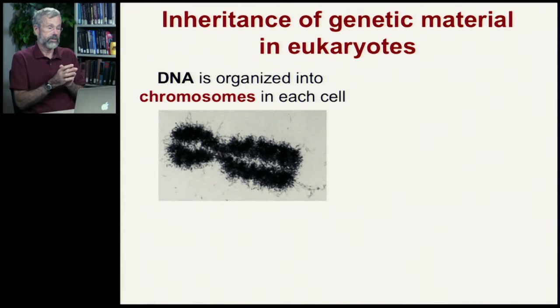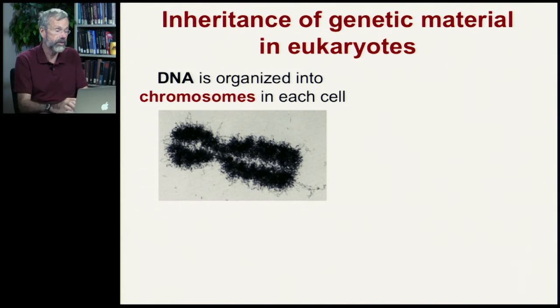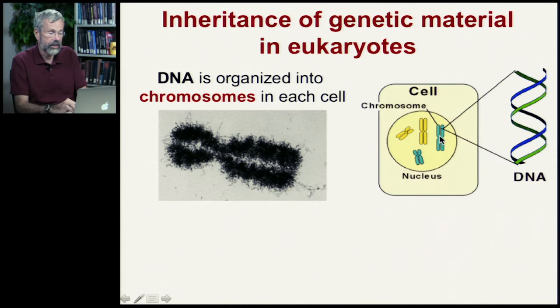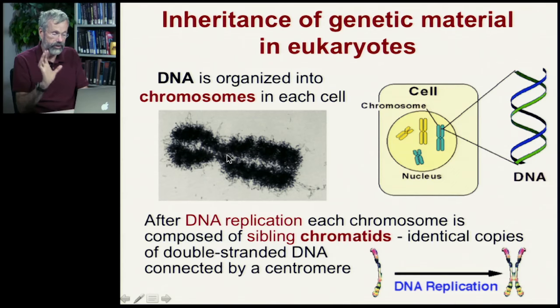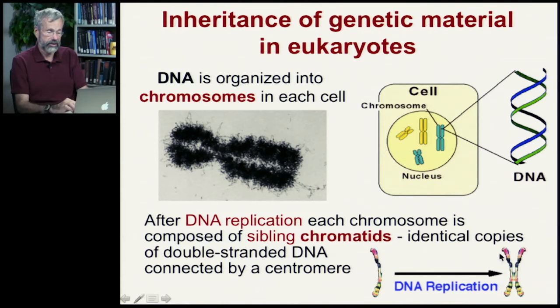Let's see what happens at cell division in eukaryotic organisms like our cells — how the genetic material is distributed into daughter cells. Our DNA is organized into 23 different pairs of chromosomes, and each chromosome undergoes DNA replication. After replication, each chromosome is composed of sibling chromatids — identical copies of double-stranded DNA — connected physically until cell division. So we start with one long strand of DNA, it gets replicated, and we have our sister chromatids.